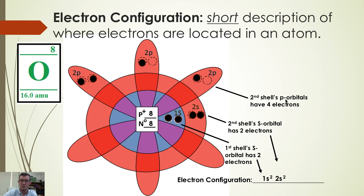And last, because the second shell's p orbitals have four electrons, chemists will write this as 2p⁴.